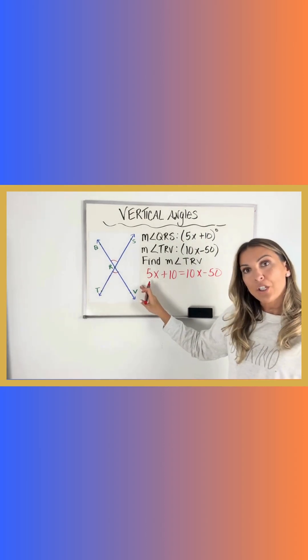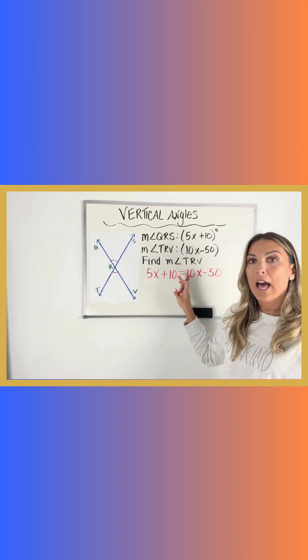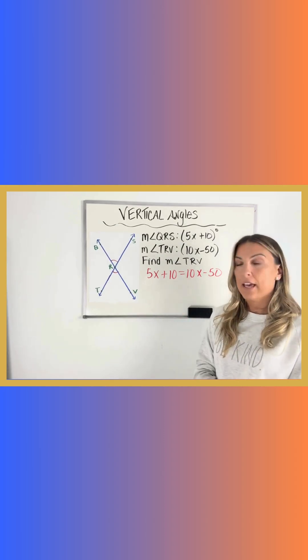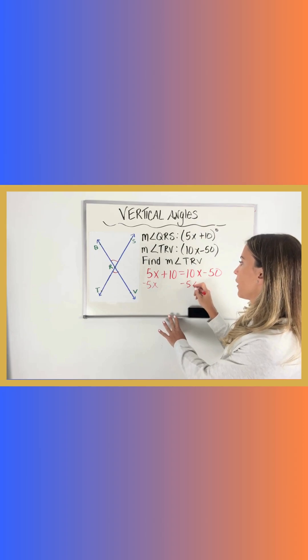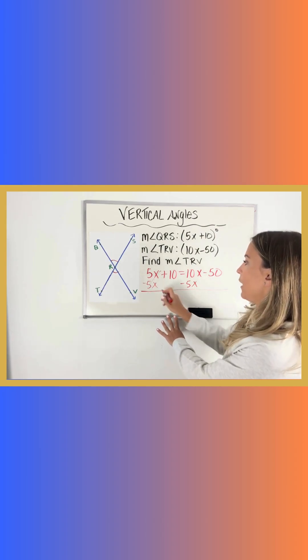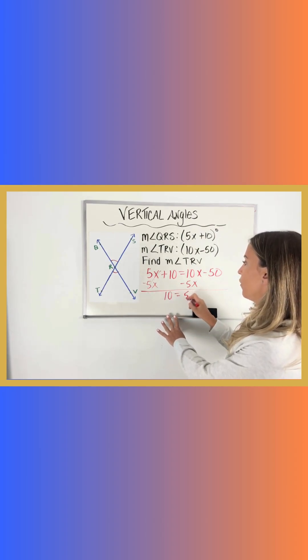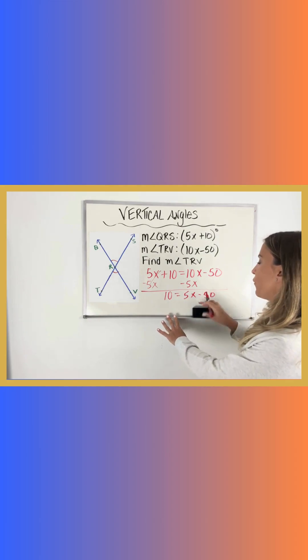Now when you're solving an equation that has variables on both sides, we have to use inverse operations to get to one side. So I'm going to subtract 5x from both sides, and that's going to give me 10 equals 5x minus 50.